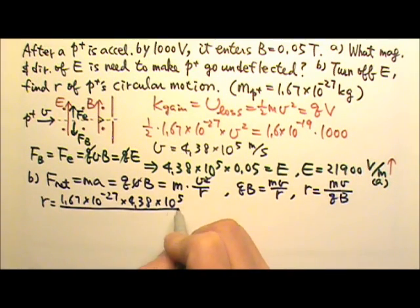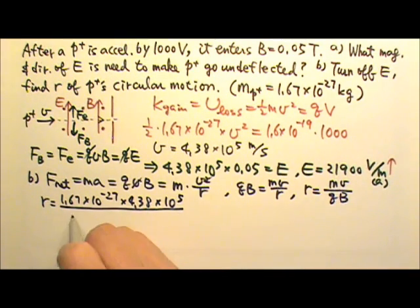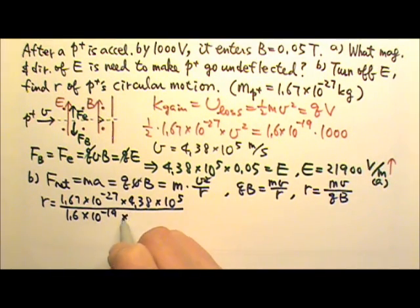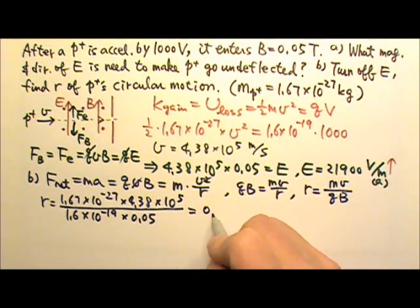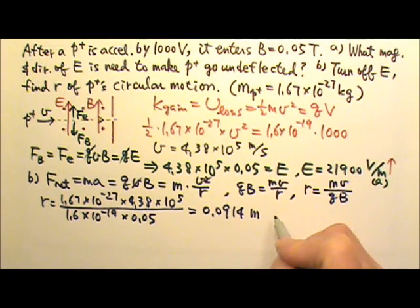Divided by q times B. The charge is 1.6 × 10^-19 Coulombs. The magnetic field is 0.05 teslas. So this will give us 0.0914 meters. And that's the radius of the circular motion.